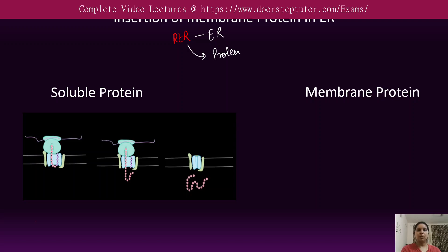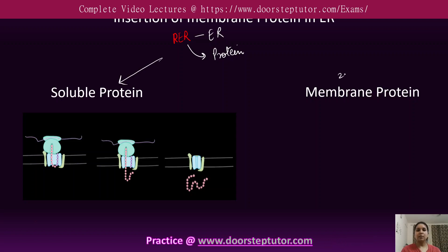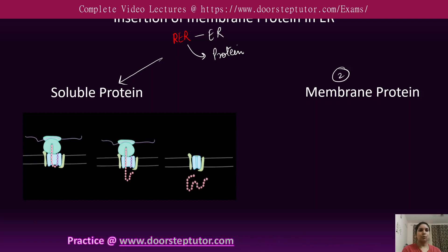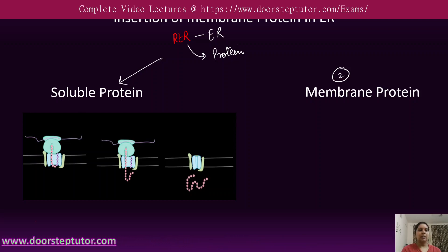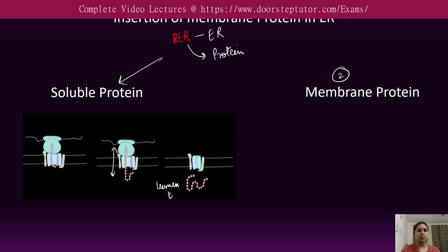The RER produces two different types of proteins: the first is the soluble protein and the second is the membrane protein. Soluble proteins, as the name suggests, are soluble in nature and easily pass across the endoplasmic membrane, getting transferred into the lumen of the endoplasmic reticulum because of their soluble nature.